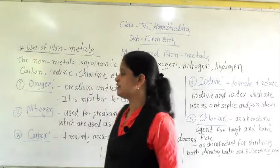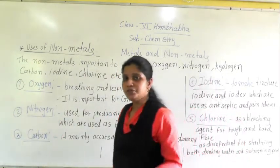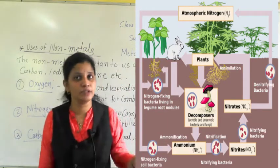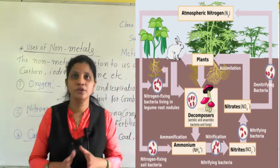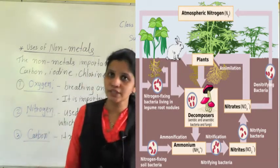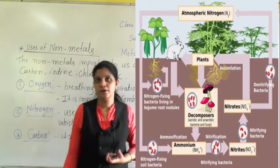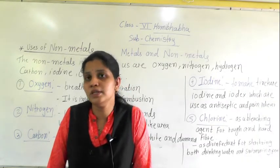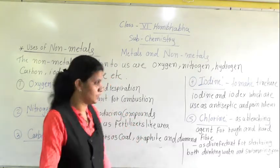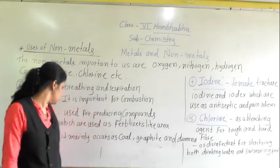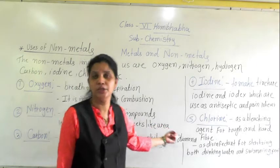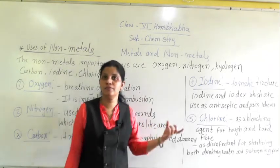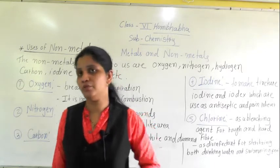The next non-metal is nitrogen. Nitrogen is also essential for us, but atmospheric nitrogen — the nitrogen present in our surroundings — is not directly used by us. Plants do nitrogen fixation, and when we eat fruits and vegetables we get nitrogen. Nitrogen is mostly used for producing compounds used as fertilizers, like urea. These fertilizers are helpful for growing plants.